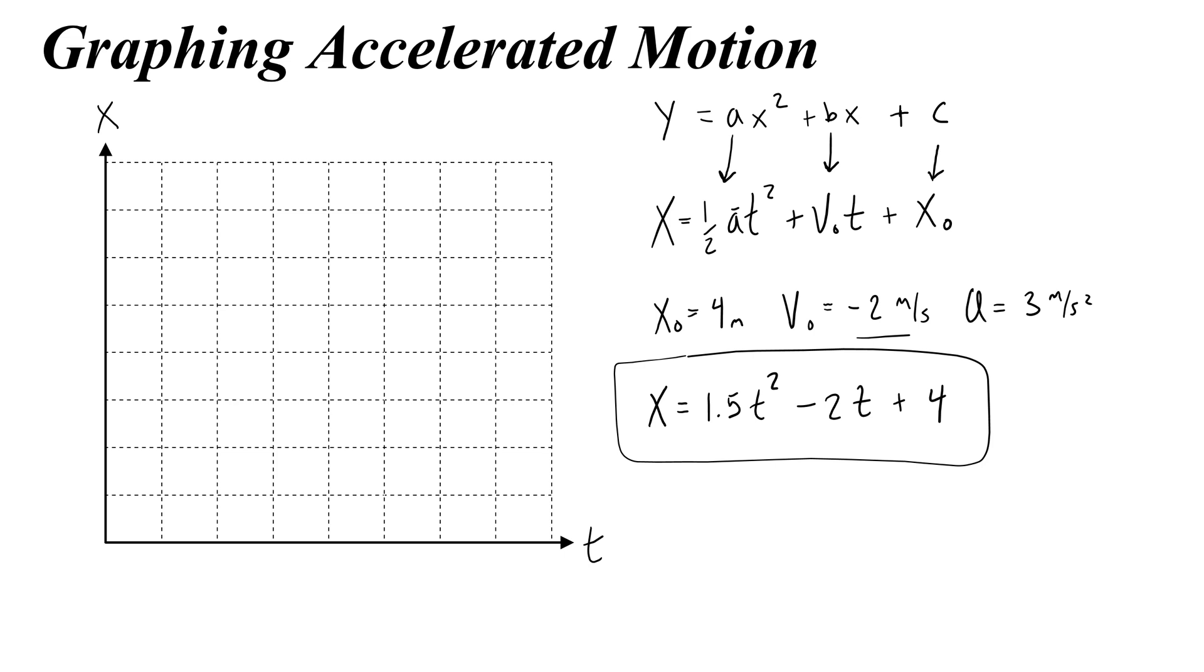So sketch a position versus time graph, and we'll mark the initial position at 4, right here. Let's talk about that negative 2. A lot of people kind of confuse what the b term in a quadratic is, so let's look at one.